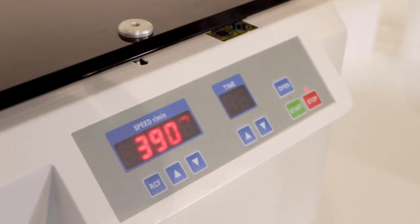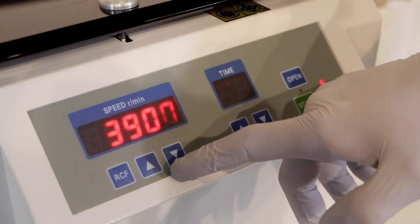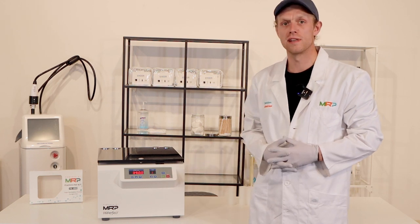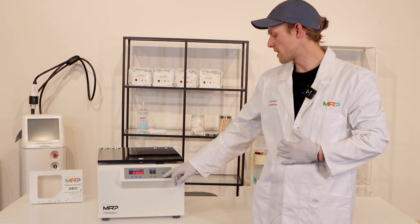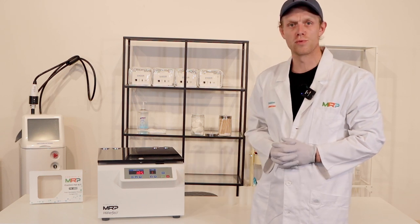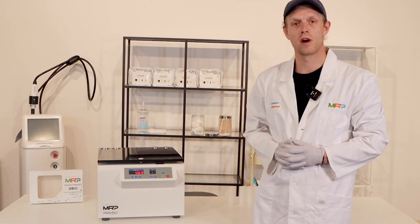Once the lid is closed, you can then select the RPM and the time duration for the centrifuge to operate. Once those are selected, you'll select start and the centrifuge will begin to ramp to the RPM speed.